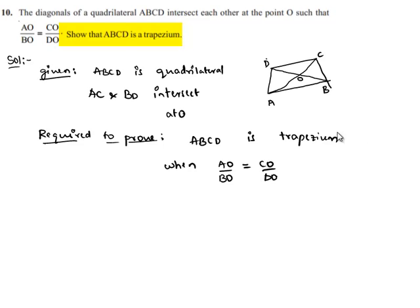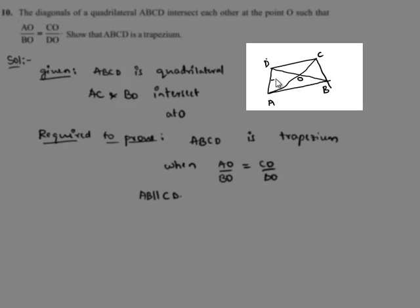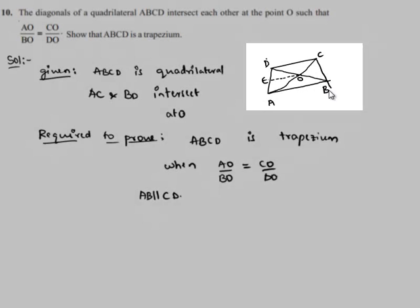A quadrilateral is said to be trapezium when two of its sides are parallel to each other. So here we are required to prove that AB is parallel to CD. In order to prove that, let us draw OE which is parallel to AB.